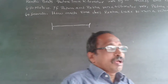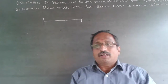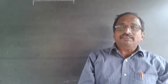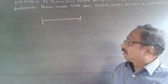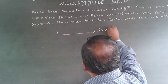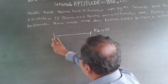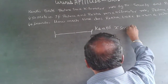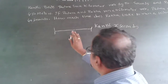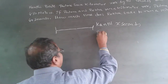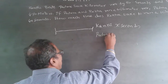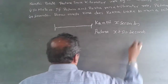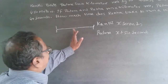Kanthi is beating both Padma and Rekha, so Kanthi is definitely first. Let Kanthi take X seconds to reach the finish line. For the same kilometer distance, because Kanthi is beating Padma by 50 seconds, Padma will take X plus 50 seconds. And Kanthi is beating Rekha by 450 meters.